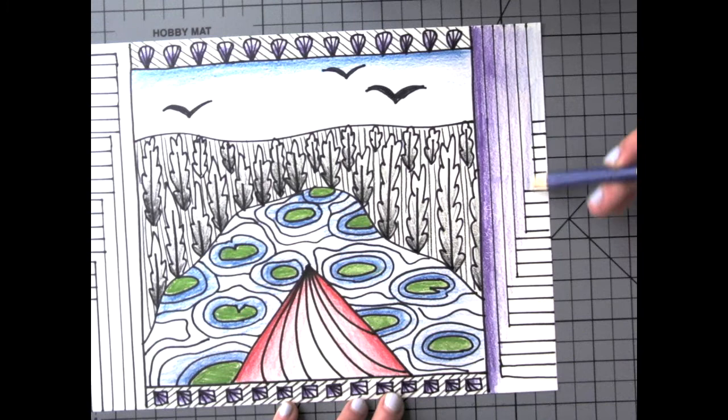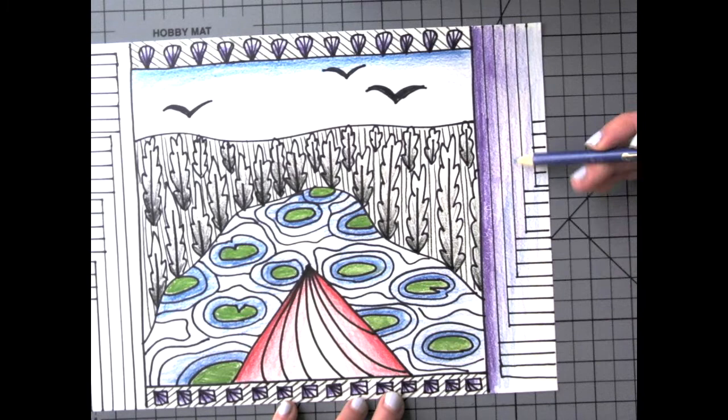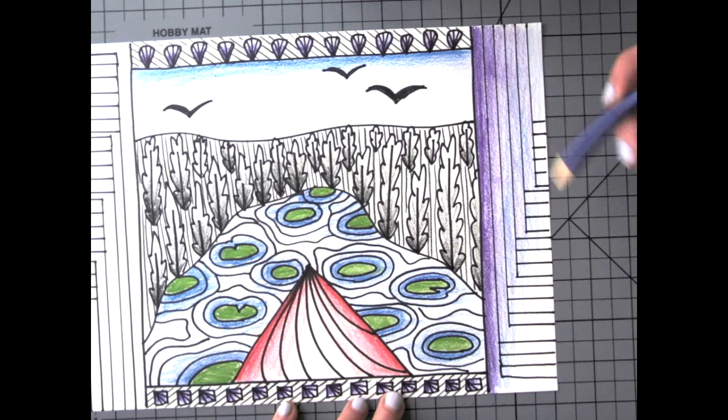Here I'm going in with a blue pencil to blend over my purple, and I'm going really, really slow. Even though it's sped up here, that can help you with getting those gradations blended really well.